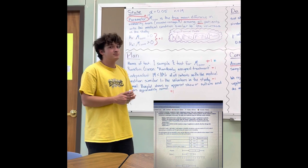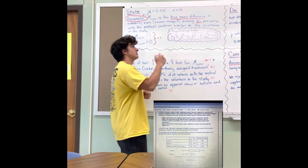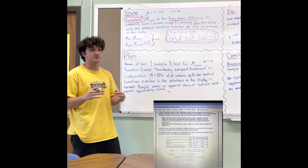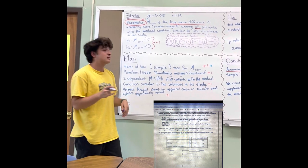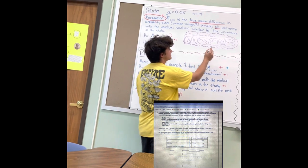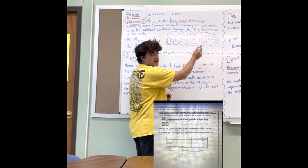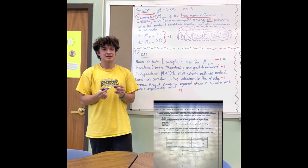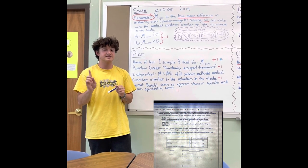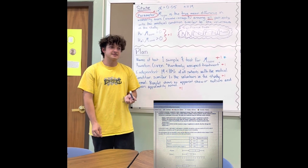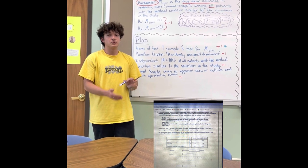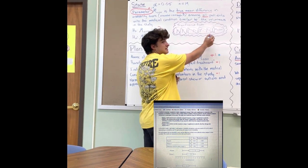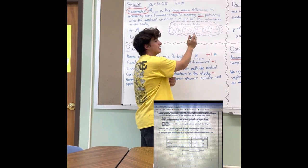Since we're given means, we know it's not going to be p or p1-p2. And since we're given a mean difference from two different groups, we know it's not a single mean — it's either mu1-mu2 or mu-diff. Since the experiment is designed as a matched pairs experiment where the same group of 19 volunteers each underwent both the control and the treatment, we know it's going to be a mean difference.